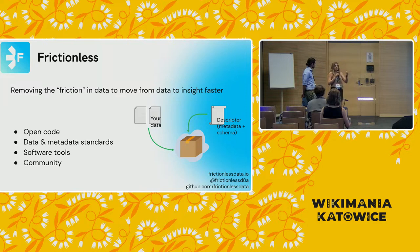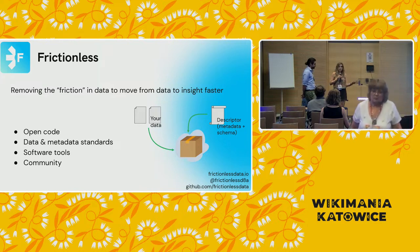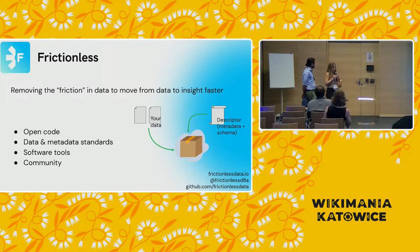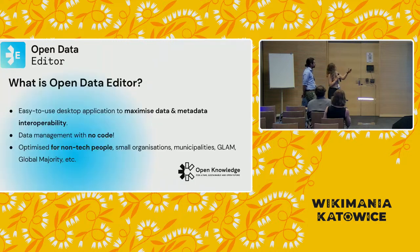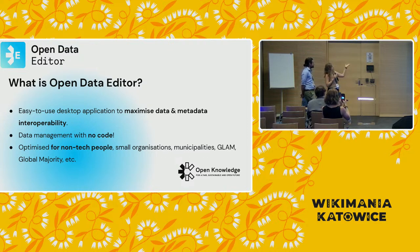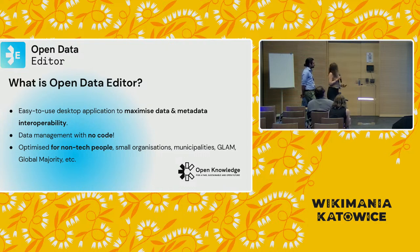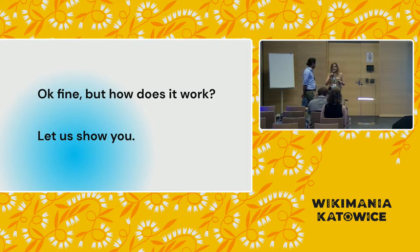Of course, both those examples and Frictionless itself were thought for communities with medium to high technical skills. So we started thinking about how we could make frictionless accessible for non-technical data producers — people who don't have coding skills. That's how we started thinking about Open Data Editor. Open Data Editor is an easy-to-use desktop application designed to maximize Frictionless and make it available for people without technical expertise. Our first conversations when designing it were with the Wikipedia community in Latin America, specifically in Buenos Aires.